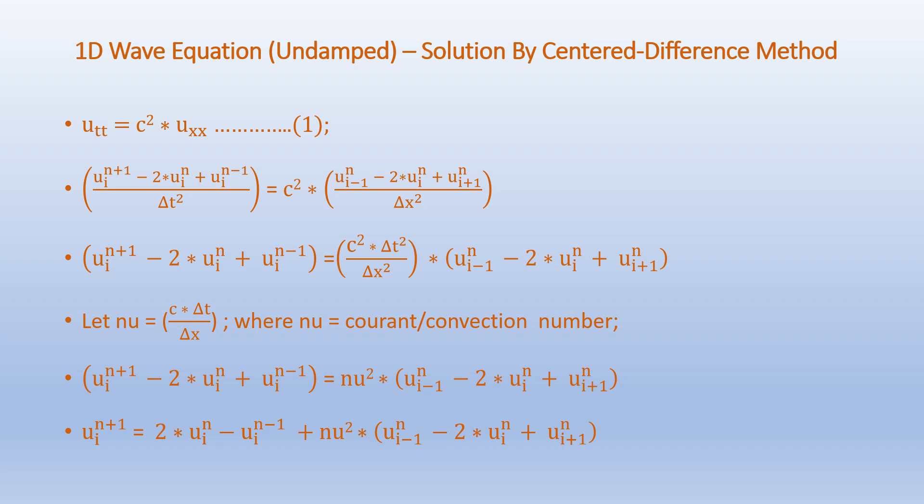We replace the second-order time derivative and the second-order space derivative using the centered difference approximation. So u_tt becomes (u_{i,n+1} minus 2 times u_{i,n} plus u_{i,n-1}) over delta t squared, where i represents the spatial location and n represents the time level. Likewise, we replace u_xx by (u_{i-1,n} minus 2 times u_{i,n} plus u_{i+1,n}) over delta x squared.